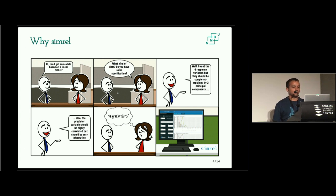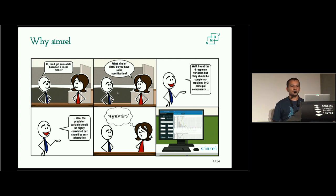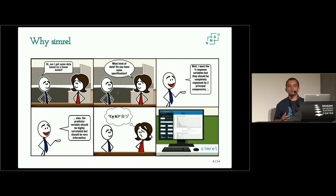This is a typical situation where we need simulated data — whether to understand models, methods, or algorithms, to compare them to others, or to understand how a method behaves on certain kinds of data. In those situations, we need data with specific properties that we want to test.